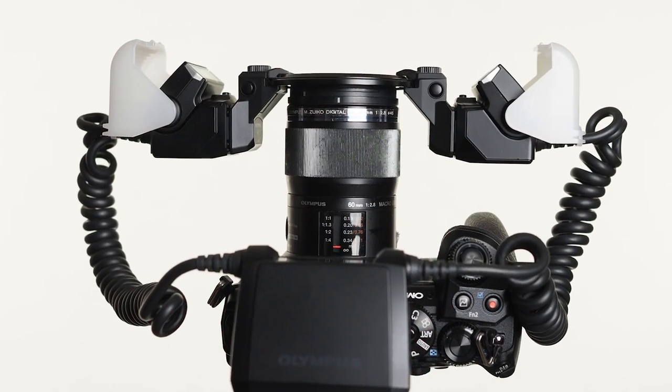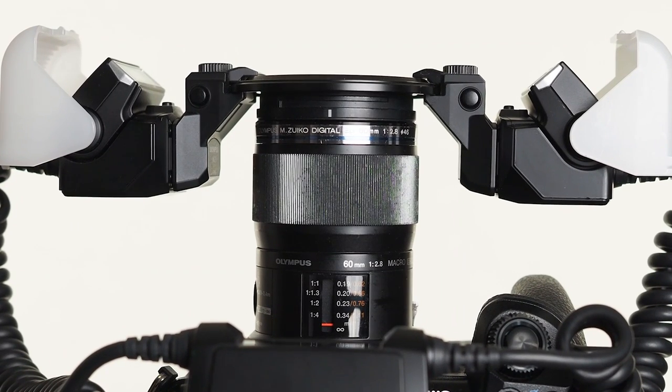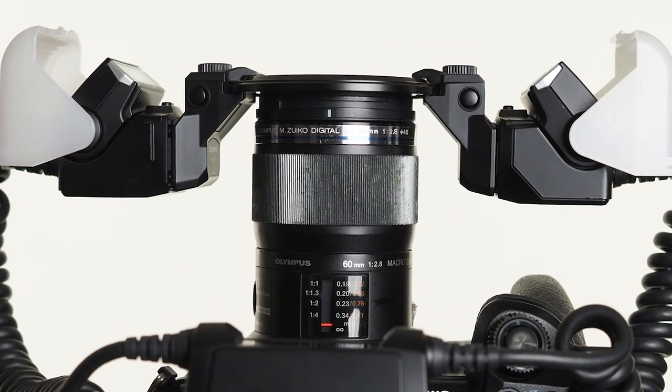The Olympus STF-8 twin flash is small, lightweight and weather sealed, just like the 60 millimeter macro lens I'm using here.